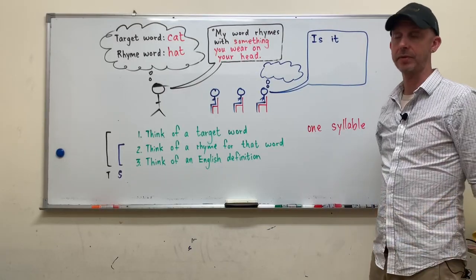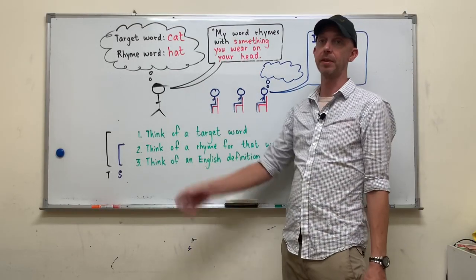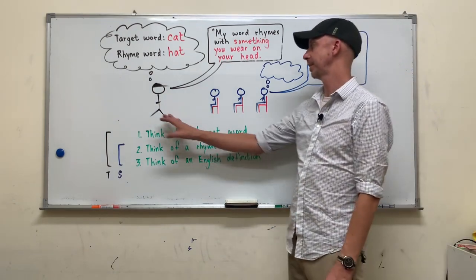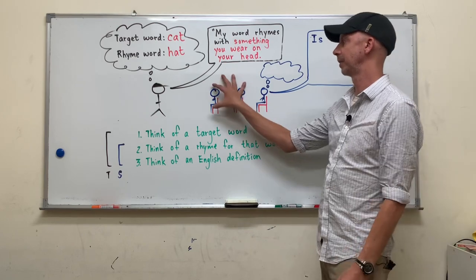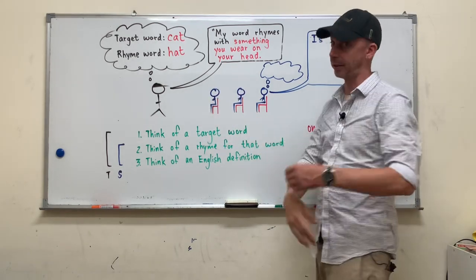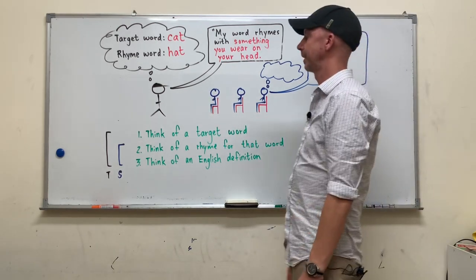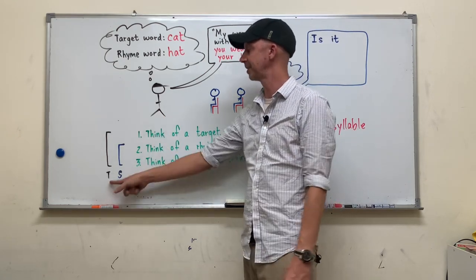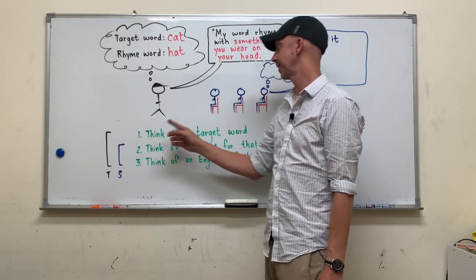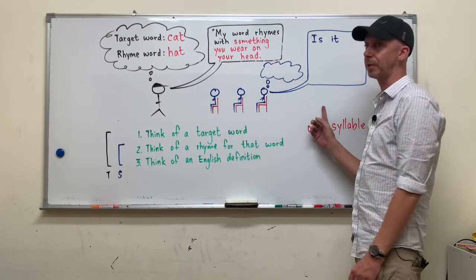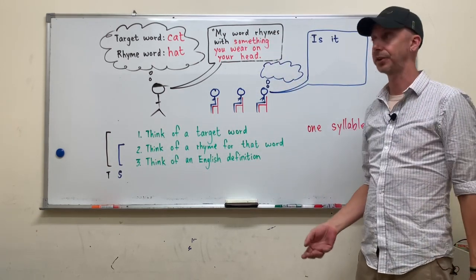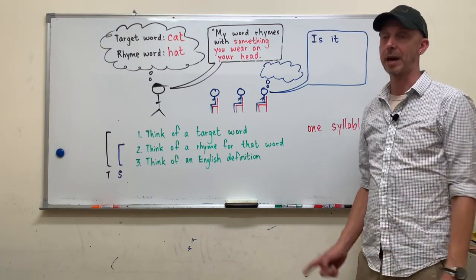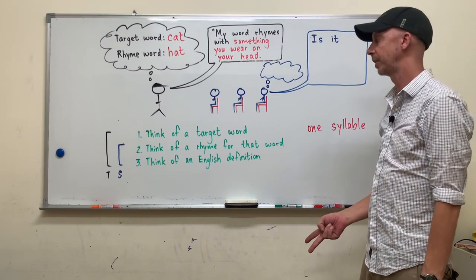Usually when I'm explaining this for the first time, I'll draw something similar on the board to let my students understand how to play. What I've done here is I've drawn a model class. This game would work with only one student, but also any number of students. You need a game master. For the first time, it's going to be the teacher. The teacher is going to be the game master and then you have all of these people who are going to be guessing and trying to find your answer.